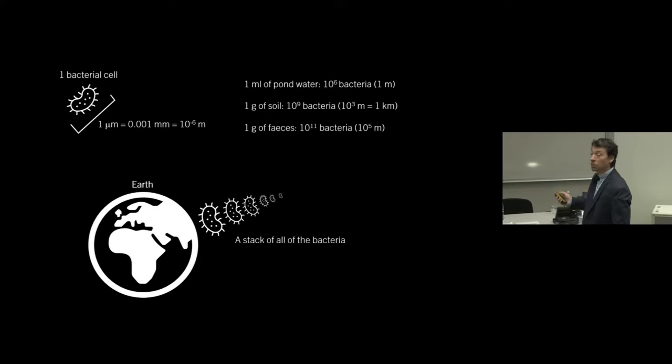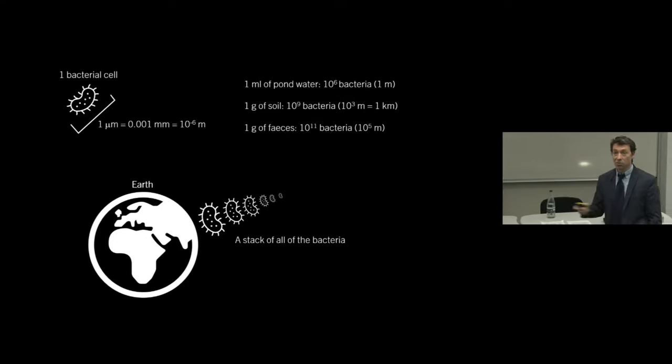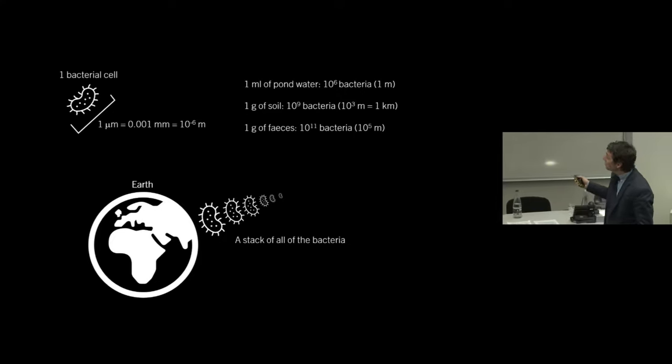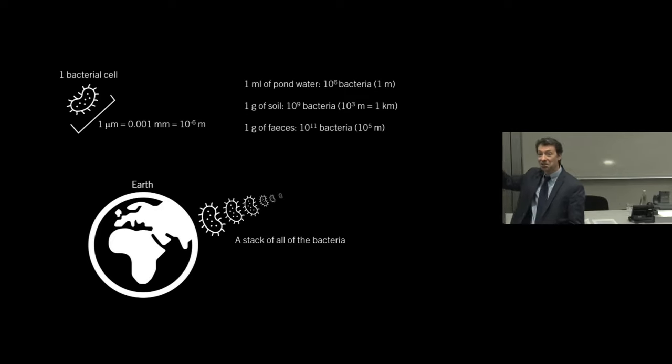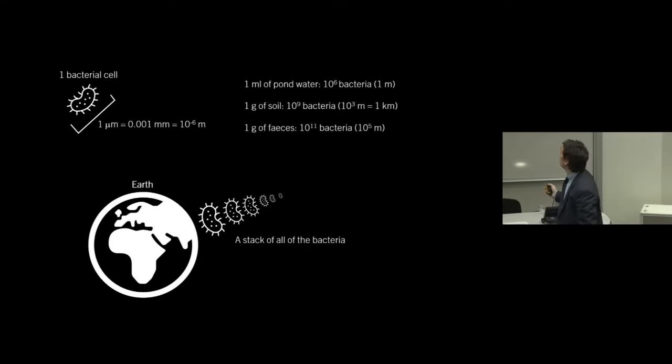But they're also incredibly abundant. So if you take a teaspoon of pond water, one milliliter of pond water, you have about 10 to the sixth bacteria in that milliliter. So one followed by six zeros. A gram of soil contains usually, typically, a lot more, more like 10 to the 9 bacteria. A gram of feces, that's poo for the children in the audience, contains about 10 to the 11 bacteria, quite a lot. And using the average size of a bacterium, we can stack them on top of each other and get what height of bacteria we reach with each of these different environmental samples. So a milliliter of pond water contains about a meter of bacteria. A gram of soil contains about a kilometer of bacteria. And a gram of feces contains about 10 to the 5 meters. And you can see that this adds up very, very rapidly.